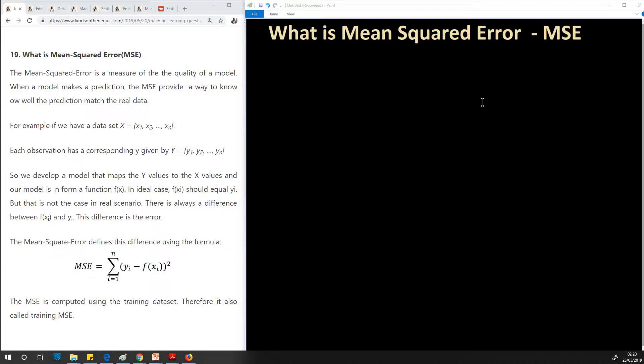Mean squared error is a measure of the quality of a model. When a model makes a prediction, the MSE provides a way to know how well the prediction matches the real data.